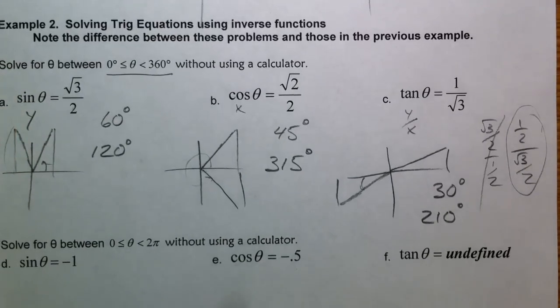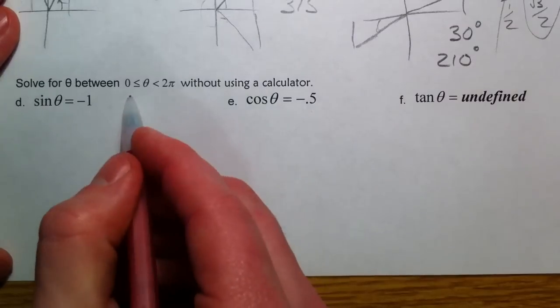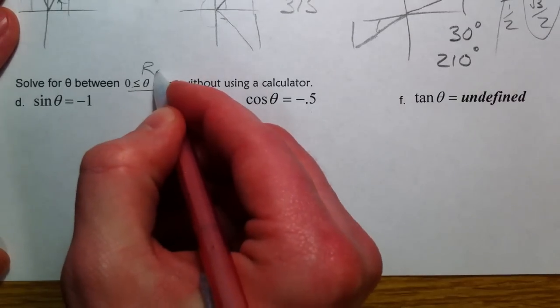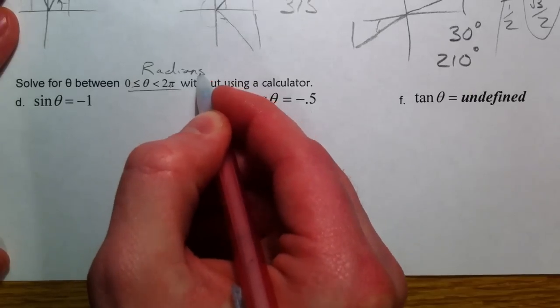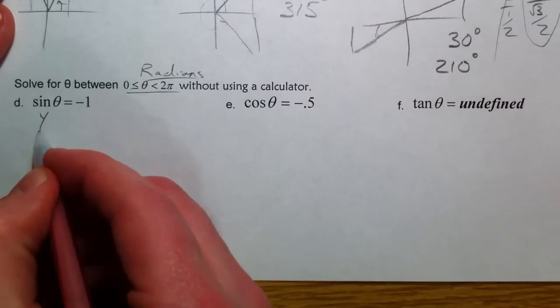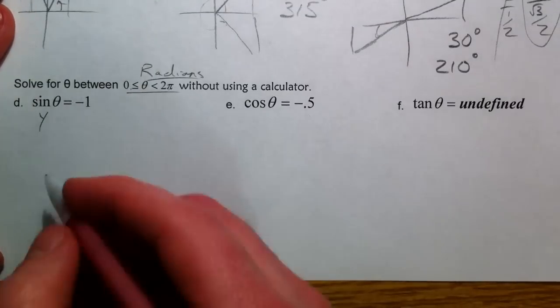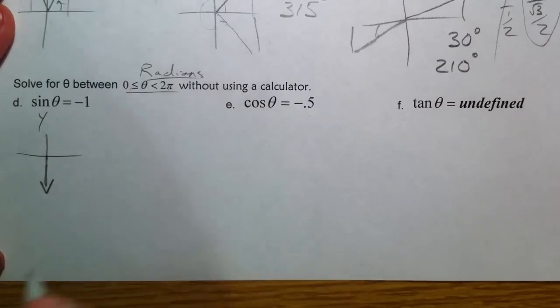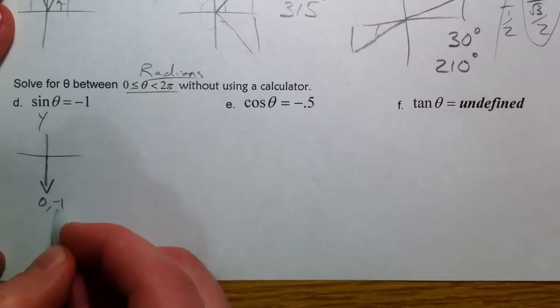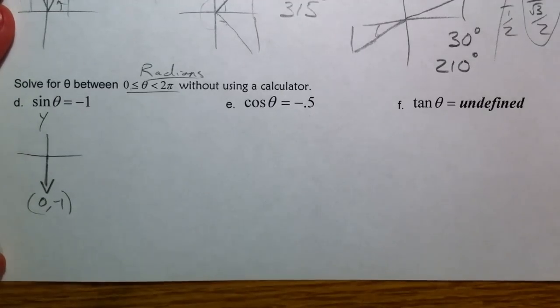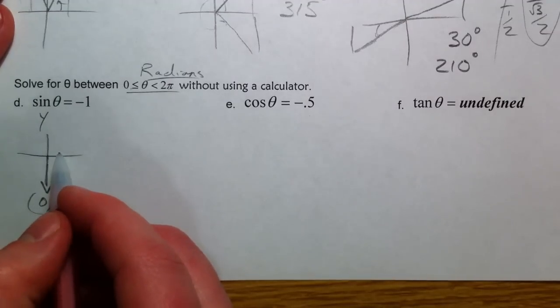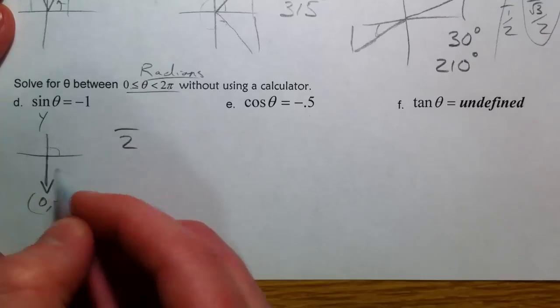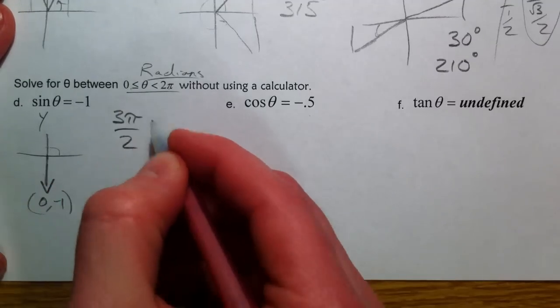Alright, so let's keep going. Solve for theta between 0 and 2π, so now we're working in radians. So all of our answers are going to be in radians. The sine value, or the y value, where is it equal to negative 1? Well, only one spot where it's equal to negative 1, and that's straight down, because this is 0, negative 1 down here. So we're talking about 90 degrees, so that's π over 2, and we have 1, 2, 3 of them, 3π over 2.